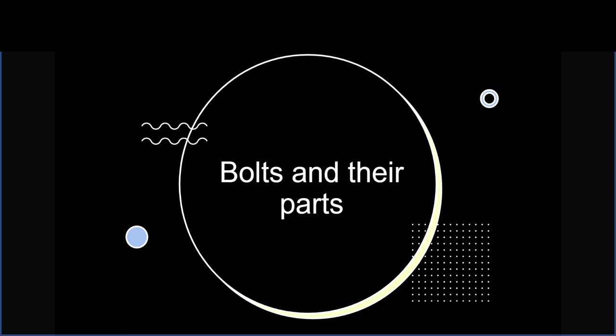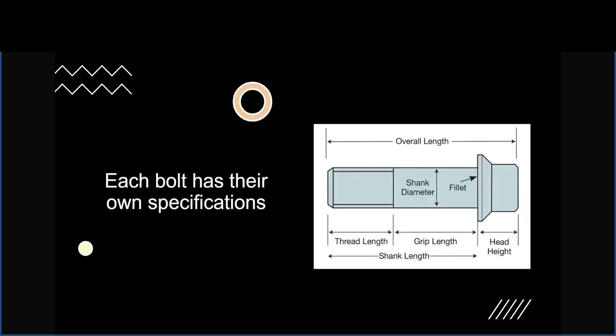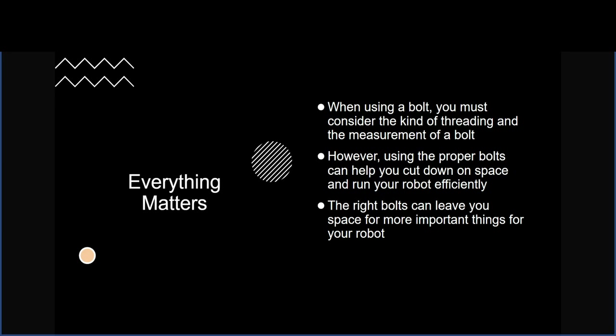There are many different kinds of bolts — wood screws, machine screws, hex bolts, carriage bolts, lag bolts — and each bolt has its own specifications. Everything matters when considering which bolt to select, and this image showing the parts of a bolt is very important.